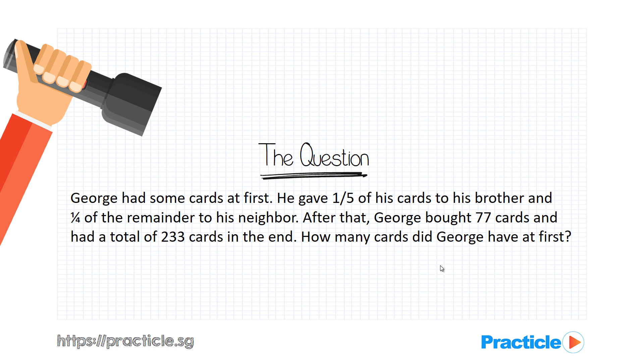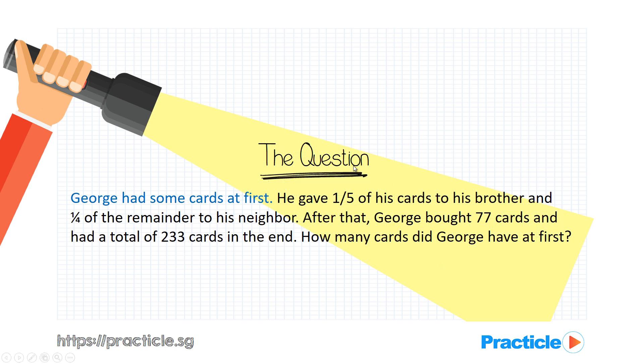Let's take a look at the question. George had some cards at first. He gave 1 fifth of his cards to his brother and 1 quarter of the remainder to his neighbour. After that, George bought 77 cards and had a total of 233 cards in the end. And we are supposed to find the number of cards that George had at first.